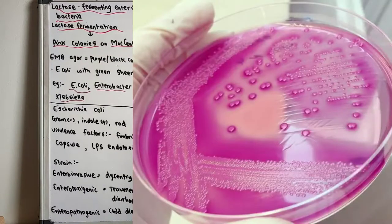You can also see in this picture the lactose-fermenting enteric bacteria on MacConkey agar - the pink colonies are seen.